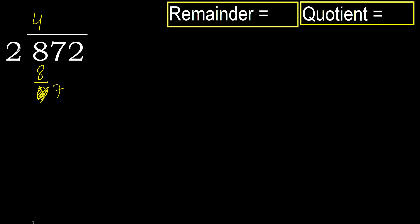2 multiplied by 4 is 8, is greater. Multiply by 3 — 6 is not greater. OK, subtract.